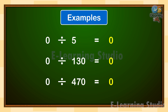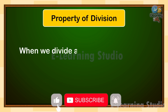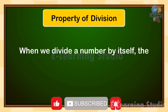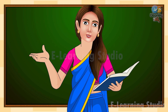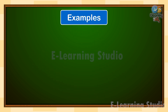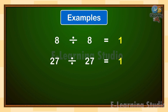In our next property, when we divide a number by itself, the quotient is 1. Let us understand with the help of some examples. 8 divide by 8 is equal to 1. 27 divide by 27 is equal to 1. 145 divide by 145 is equal to 1.